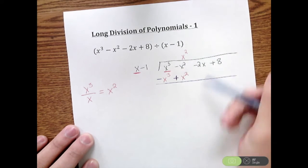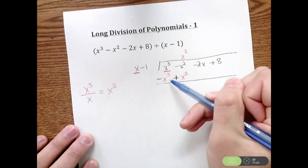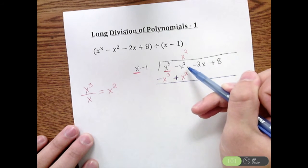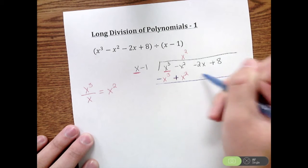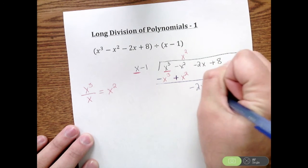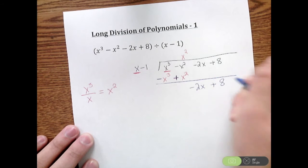So adding vertically down, X cubed minus X cubed is zero. Negative X squared and X squared, that's also zero. And these terms on the end, there's nothing added or subtracted to them, so they're just going to come down. So I have negative 2X plus 8.